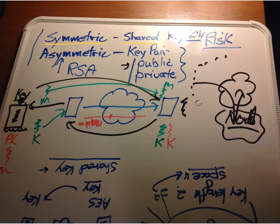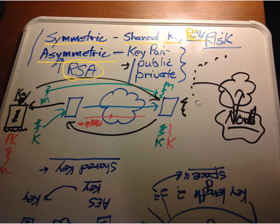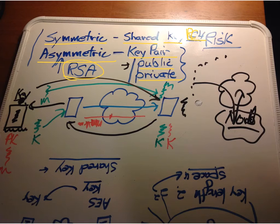Symmetric shared keys — I gave an example of RC4 as an encryption method. Asymmetric, like RSA, which we use a lot — they have a key pair: a public key and a private key. We talked about asymmetric: we have a public and private key.